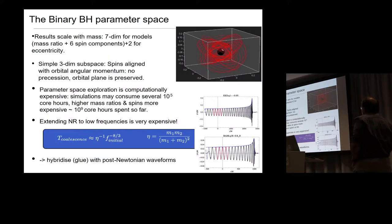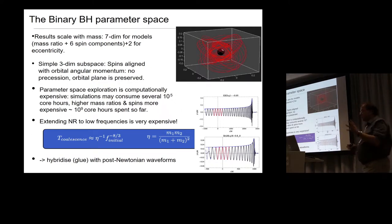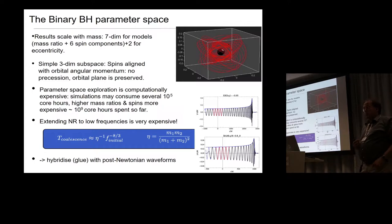I want to talk about the binary black hole parameter space. Our results scale with mass. For the detection, the mass is very important because the mass tells you how you shift relative in frequency to your detector sensitivity, but for calculating the signals in the Einstein equations, the mass is just the scale factor. Unless you have matter, then things are more complicated. And so you have to deal with seven dimensions, which is mass ratio and six spin components. And then if you actually want to deal with eccentricity, you have two more. Precession, if you have all six spin components, can give you very complicated gravitational wave signals and very complicated orbital dynamics. But there's a simple three-dimensional subspace, which is when your spins are aligned with the orbital momentum.